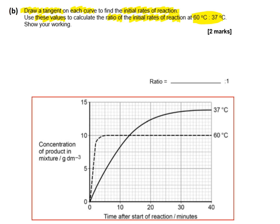To find the initial rate at time point zero, we draw a straight line — a tangent — starting at 60°C from time point zero, sitting on top of the curve. This blue line goes from zero up to 15 grams per decimetre cubed. The time point at which 15 grams per decimetre cubed of product has been formed is three minutes. Drawing the next tangent for 37°C, the straight line also starts at time point zero and we can extend it up to 15 grams per decimetre cubed.